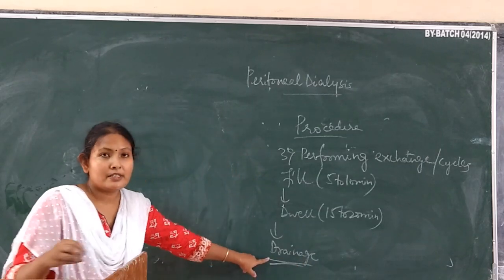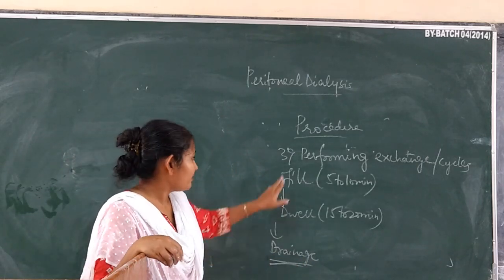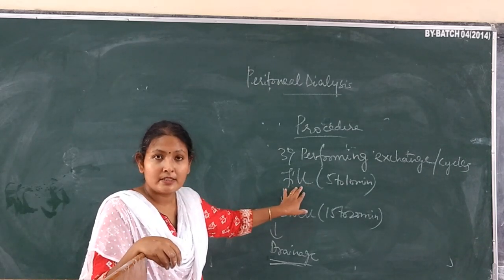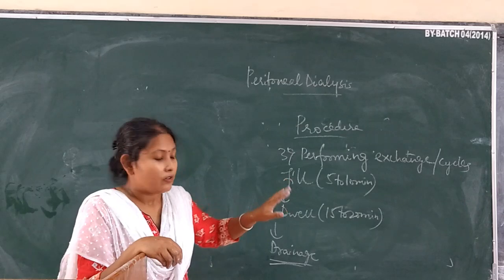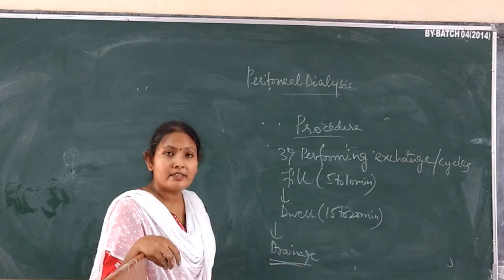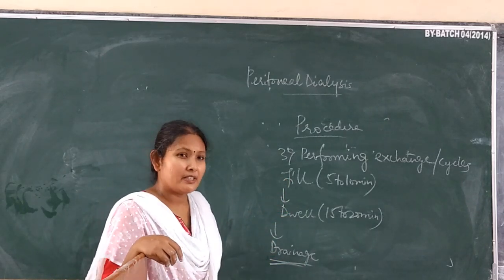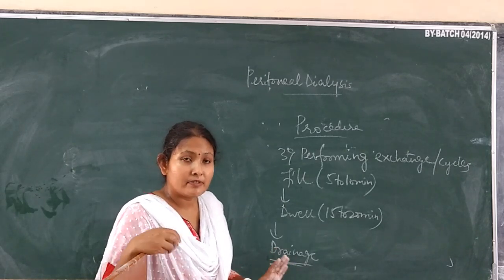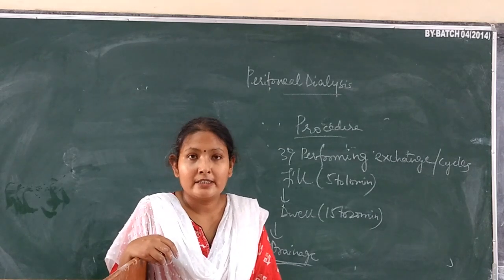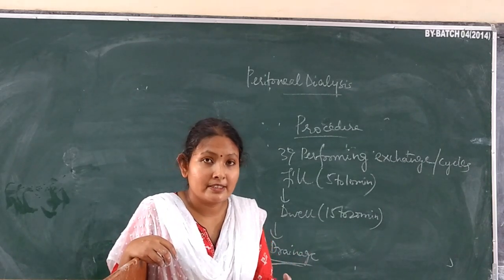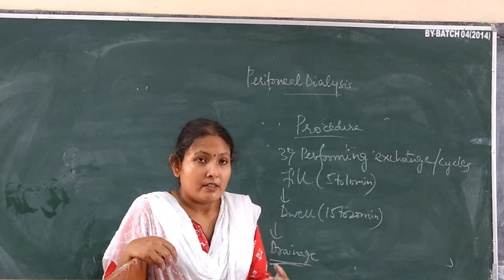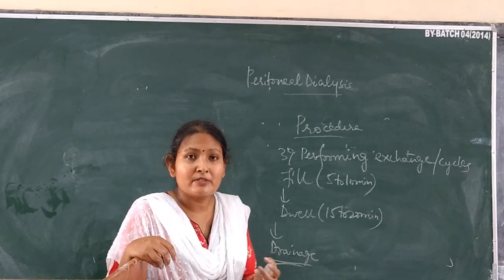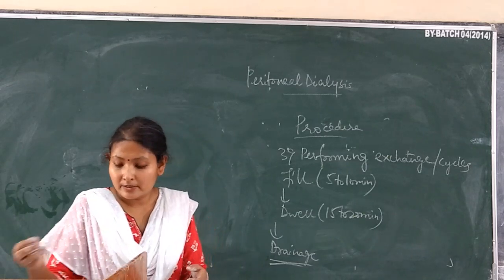We must ensure that the output is at least equal to the amount infused. We also monitor the colour of the drainage: if it is clear, there is no sign of infection. However, if the drainage colour of the dialysate is cloudy, that indicates a chance of infection or pus formation in the peritoneal cavity.